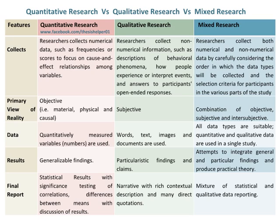In mixed research, researchers collect both numerical and non-numerical data, carefully considering the order in which data types will be collected and the selection criteria for participants in the various parts of the study. Primary view of reality in quantitative research is objective — material, physical, and causal. In qualitative research it is subjective. In mixed research it is a combination of objective, subjective, and intersubjective.